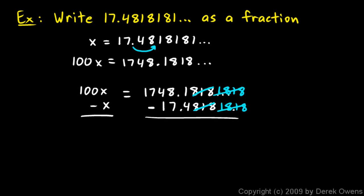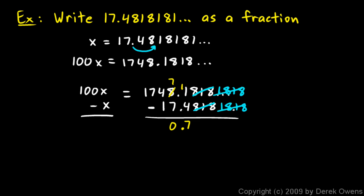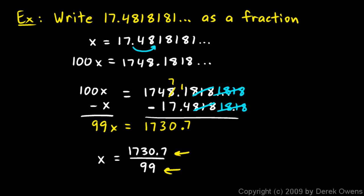What I'm left with is 1748.1 minus 17.4. Subtracting: borrowing makes that a 7, and 11 minus 4 is 7; then the decimal point; 7 minus 7 is 0; 4 minus 1 is 3; and I have 1 and 7. On the left I have 99x. So 99x equals 1730.7, meaning x equals 1730.7 over 99. To make this an integer over an integer, I multiply top and bottom by 10, giving 17307 over 990.